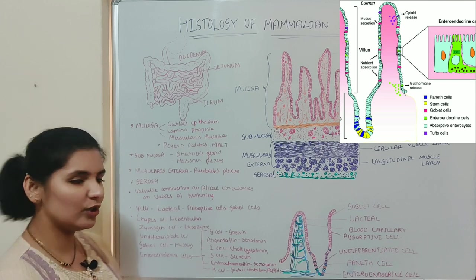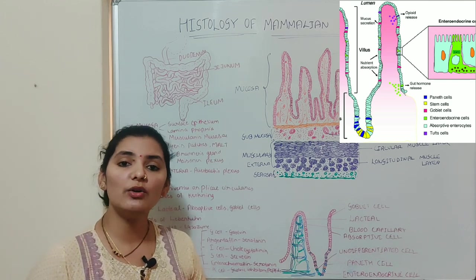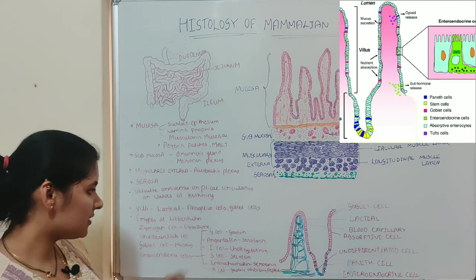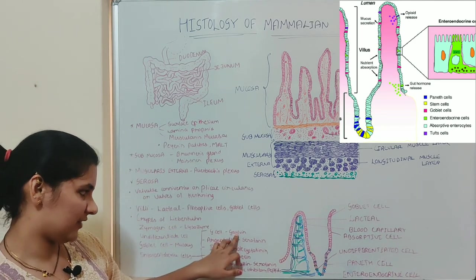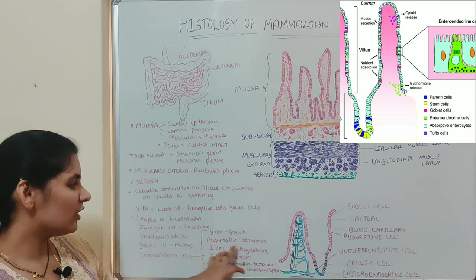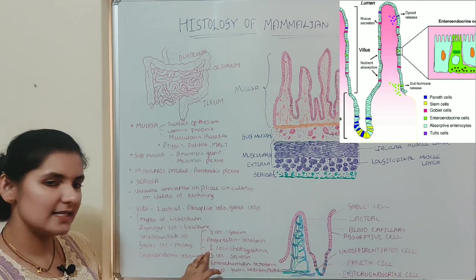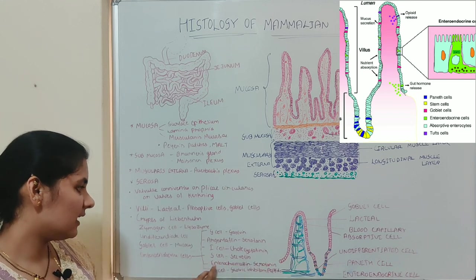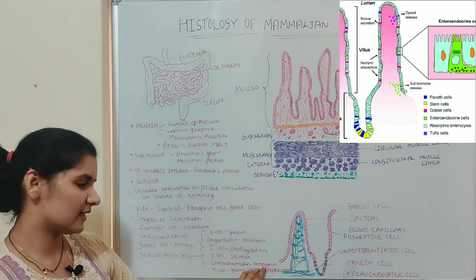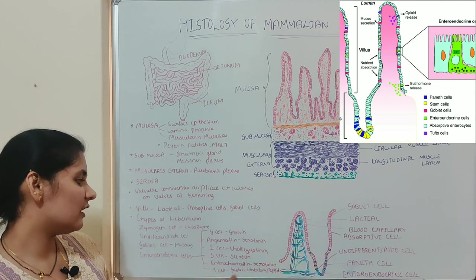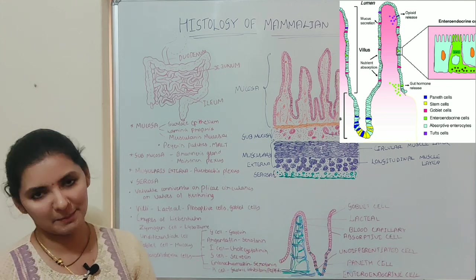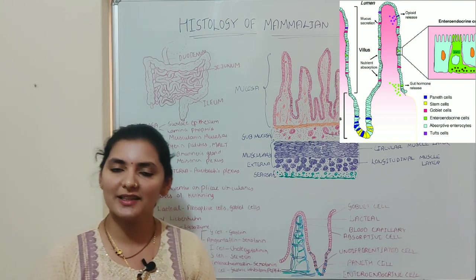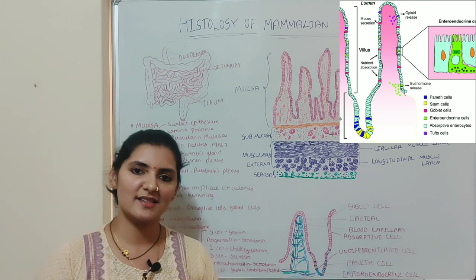The fourth type of cell is enteroendocrine cells. These are a group of cells which secrete various hormones. They include G cells, which secrete gastrin; argentaffin cells, which secrete serotonin; and K cells, which produce gastric inhibitory peptide (GIP). So that covers the different types of cells and structures present in the small intestine.